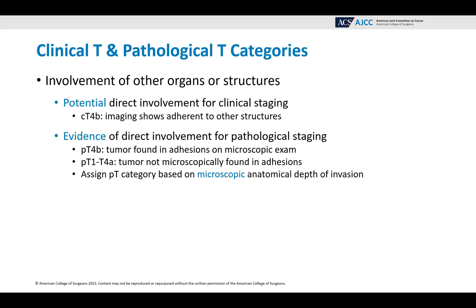When looking at clinical T and pathological T categories for involvement of other organs or structures, it's important to understand the difference. You might see potential direct involvement for clinical staging — for example, clinical T4B imaging might show adherence to other structures that may appear involved, and that's the physician's judgment call. But for pathological staging, you need evidence of direct involvement. So pT4B means that tumor was found in those adhesions on microscopic exam.